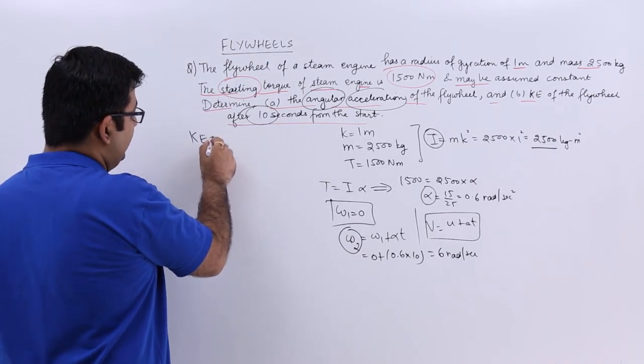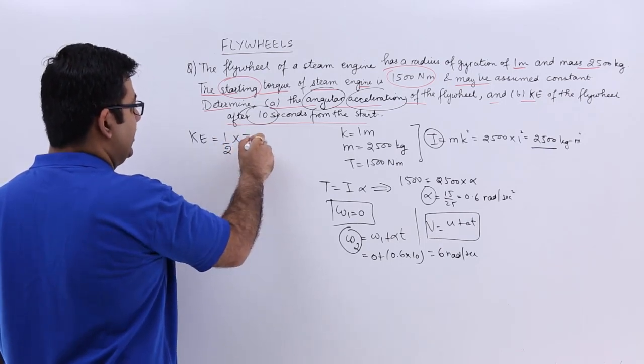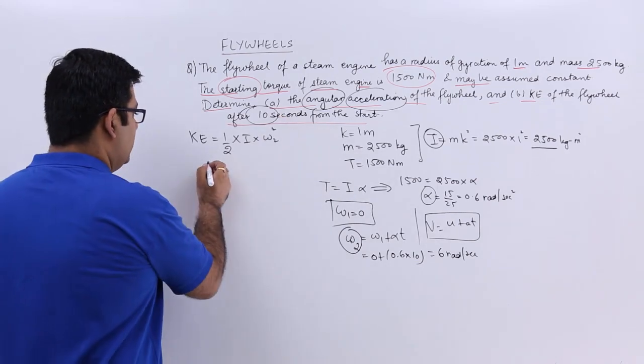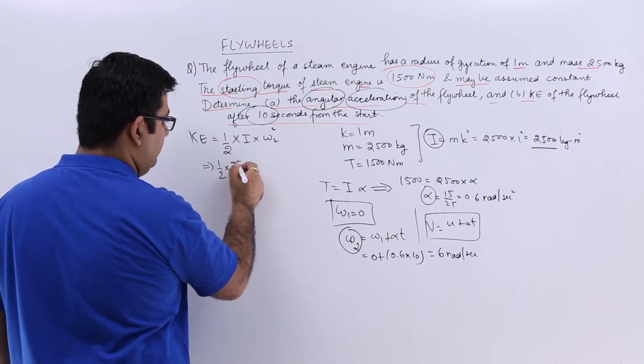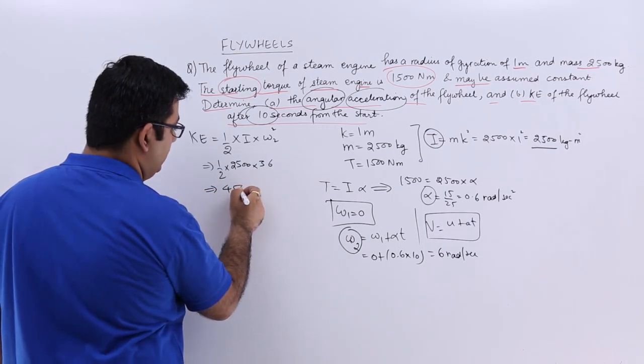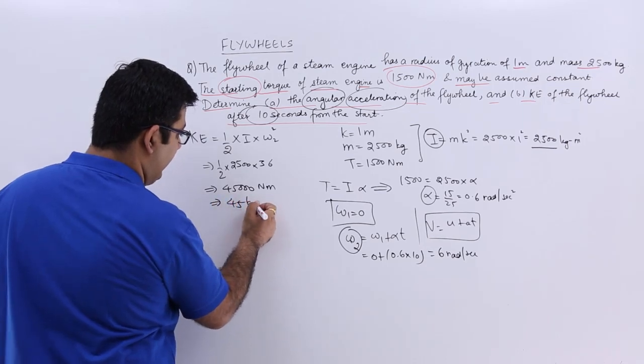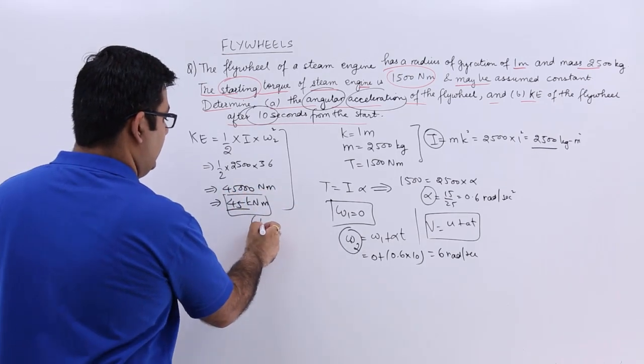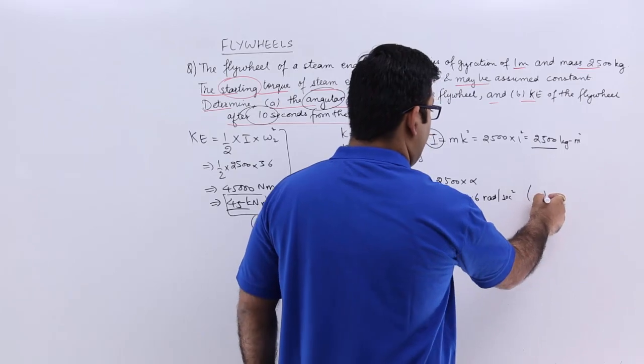So kinetic energy becomes 1/2 times I times omega 2 squared. This becomes 1/2 times 2500 times 36. This gives you 45,000 newton meters or 45 kilonewton meters. That is part b of the question, and the angular acceleration was part a.